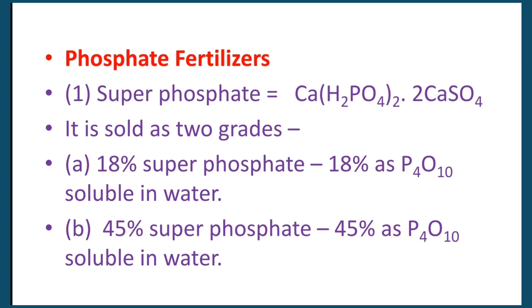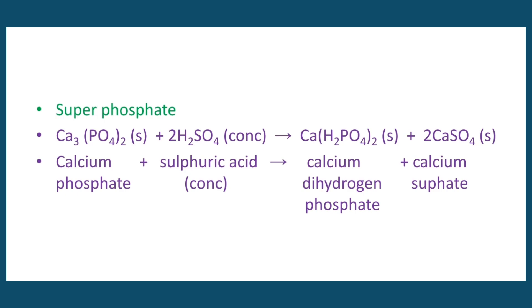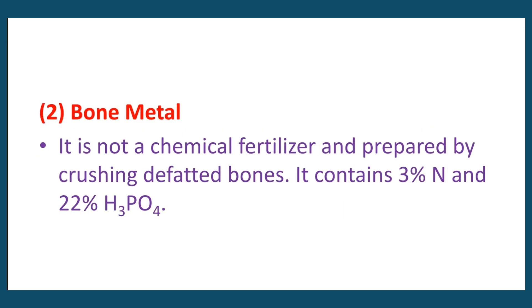Superphosphate contains about 15% phosphorus. There is also 18% and 45% phosphate content in different grades. Bone meal is a phosphate fertilizer containing 3% nitrogen and 22% phosphoric acid.